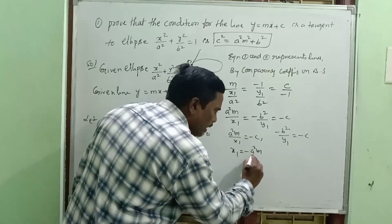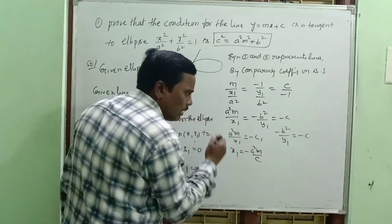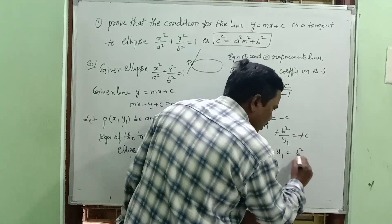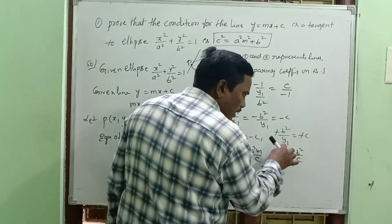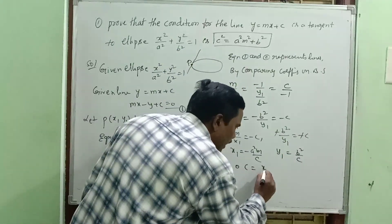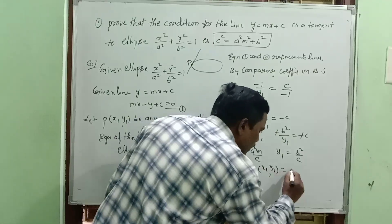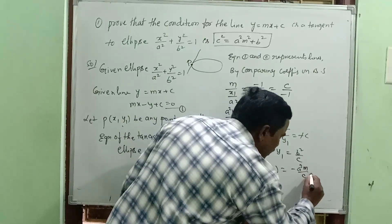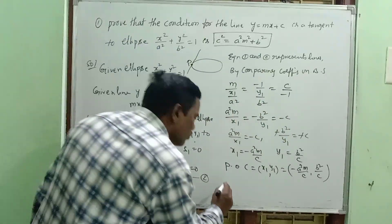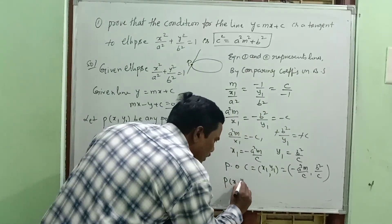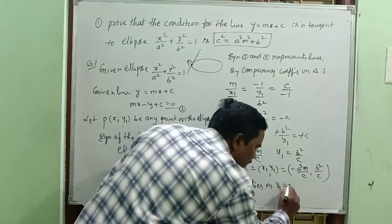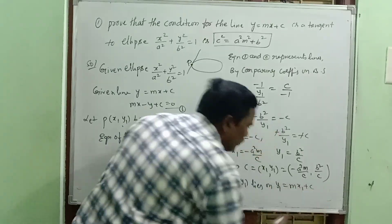Solving: x1 equal to minus a square m by c, and y1 equal to b square by c. So the point of contact is (x1, y1) equal to (minus a square m by c, b square by c). Since P(x1, y1) lies on the ellipse, it also lies on the line y equal to mx plus c.